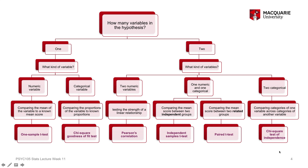Hopefully using this decision tree and flowchart will help you understand, for any specific hypothesis, which of these six tests you need to use to address and test that hypothesis. For the rest of today's lecture, we'll essentially work through this flowchart to identify different kinds of hypotheses and the corresponding kinds of tests involved.